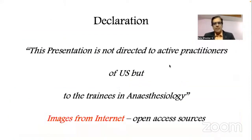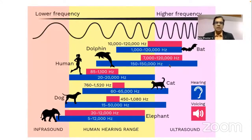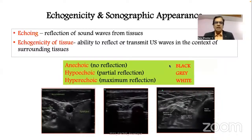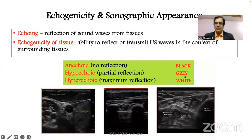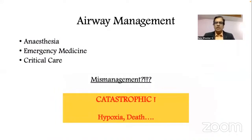There are various protocols related to the use of ultrasound. In today's presentation I am going to pick up some images from published articles and free-access internet sources for clarity. Ultrasound is sound beyond 20,000 Hz which we can't hear. Echogenicity refers to the reflection of sound waves from tissues: anechoic means no reflection and appears black, hyperechoic means maximum reflection and appears white, and hypoechoic means partial reflection and appears gray.